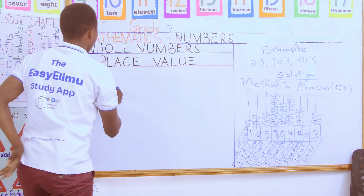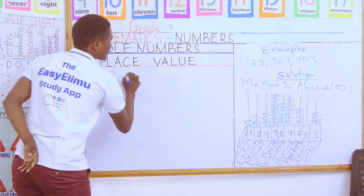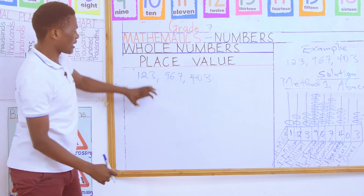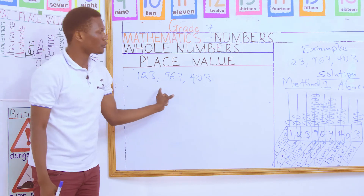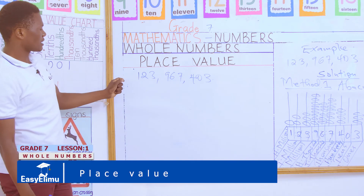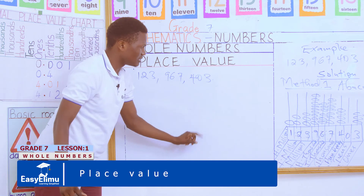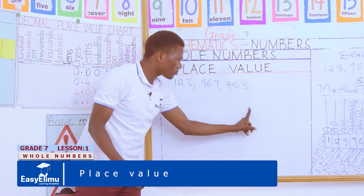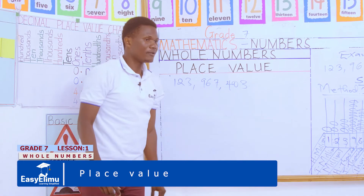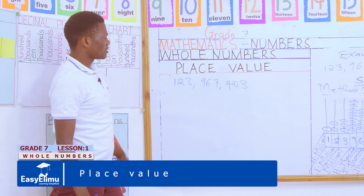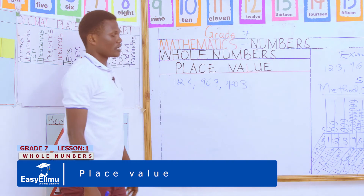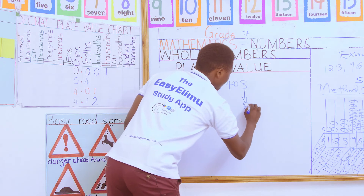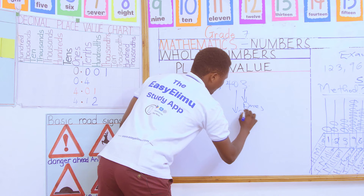Now let us solve the same question using method two — the usual tabulated place value method from previous classes. We rewrite the number: 123 million, nine hundred and sixty-seven thousand, four hundred and three. We drop vertical arrows pointing downward at each digit, then indicate the place value below each arrow. Starting from the right: digit 3 is ones, digit 0 is tens, digit 4 is hundreds.